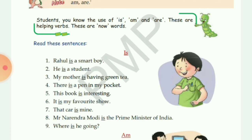'This book is interesting' — book is singular, so we use 'is'. 'It is my favorite show' — 'it' is one of the five friends of 'is', so we always use 'is' with it. 'That car is mine' — one car, one object, so we use 'is'. 'Mr. Narendra Modi is the Prime Minister of India' — one person, so we use 'is'. 'Where is he going?' — this is a question, so we put 'is' before 'he'.